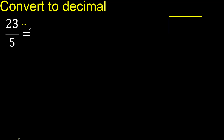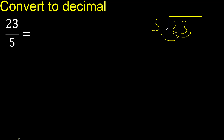23 divided by 5. 2 is less, therefore next. 23 — with 23, 5 multiplied by which number is nearest to 23 but not greater?